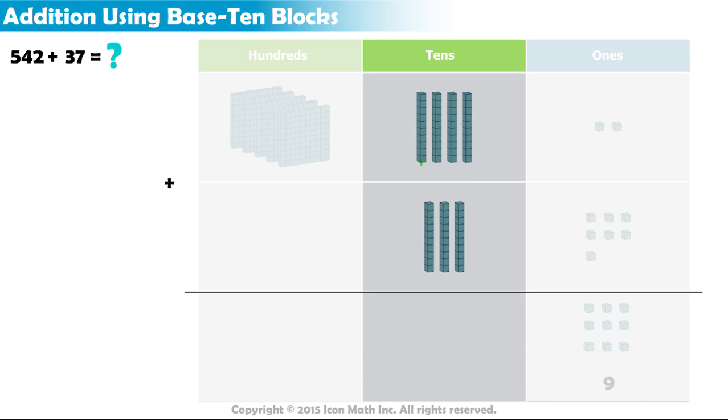In the tens place, we have 4 rods here, and another 3 rods here, so the total number of rods is 7. In other words, we have 7 tens.